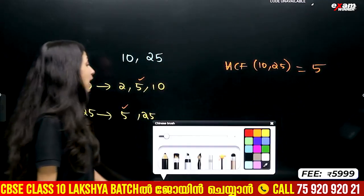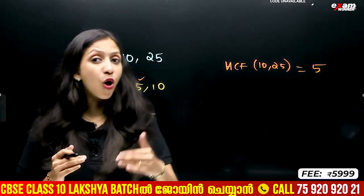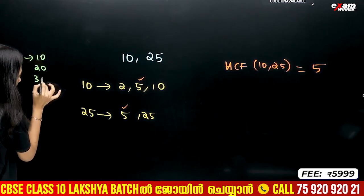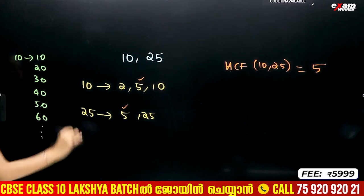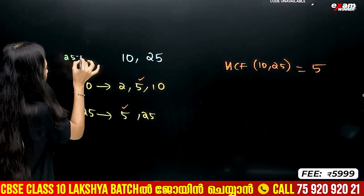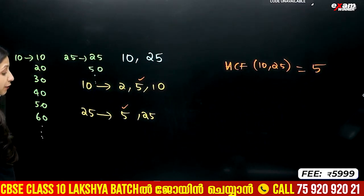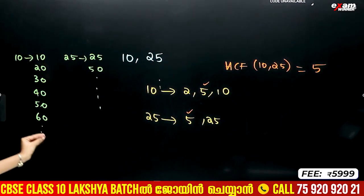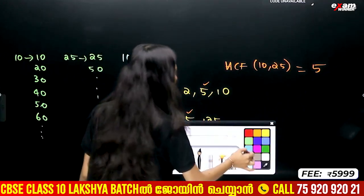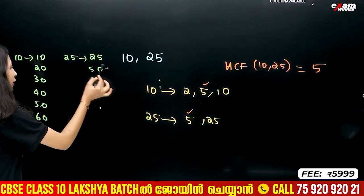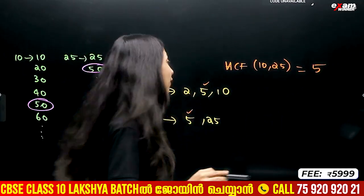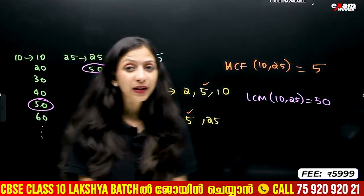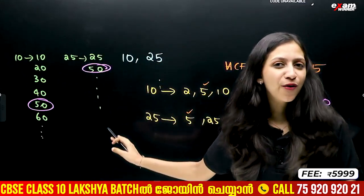Now, if we try to find LCM using multiples — multiples of 10 are 10, 20, 30, 50... and multiples of 25 are 25, 50... The Least Common Multiple is 50. So LCM of 10 and 25 is 50.